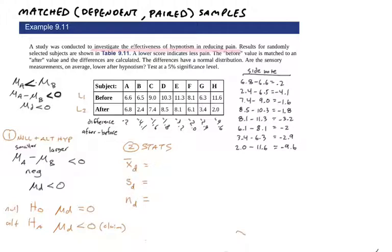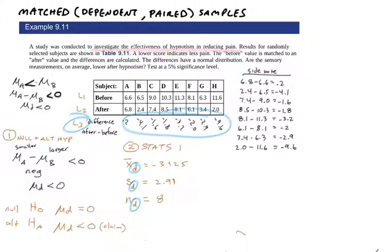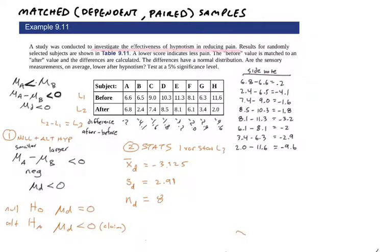Next step: let's get some stats. We're interested in the average, standard deviation, and n of the differences. We plug the differences into list three and run one-var stats on list three. Notice we use a subscript d on everything — the average of the differences, the standard deviation of the differences, and the sample size of the differences. In the calculator, if you go to the top of list three, you can enter L2 minus L1 and it will subtract all pairs automatically, which is helpful for a long list.